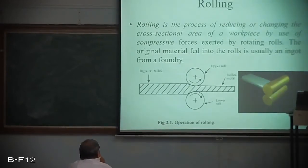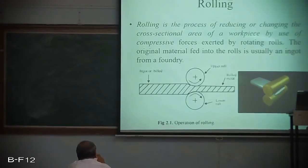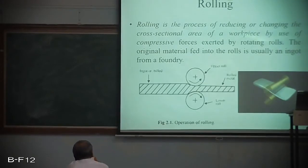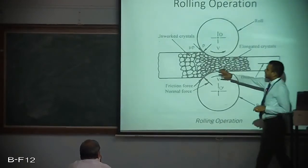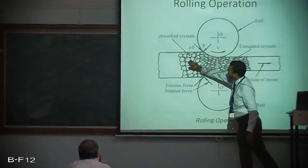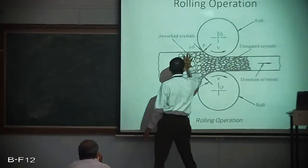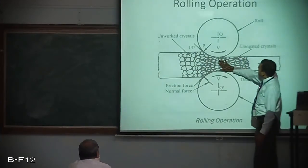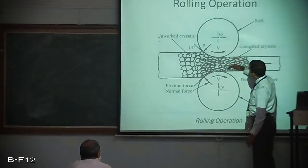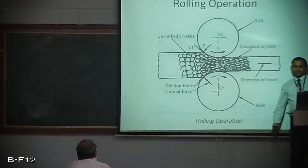Rolling is a bulk process in which the cross section of the material is reduced and its length is increased. The final cross section is determined by the impression cut in the rolled surface. The crystal structure changes during rolling — initially unworked crystals are distributed uniformly, and even though crystals become elongated, distribution becomes more equal as it passes through the rolls.